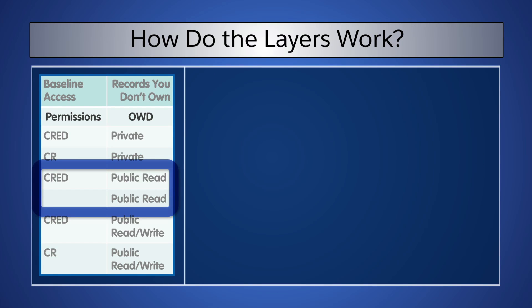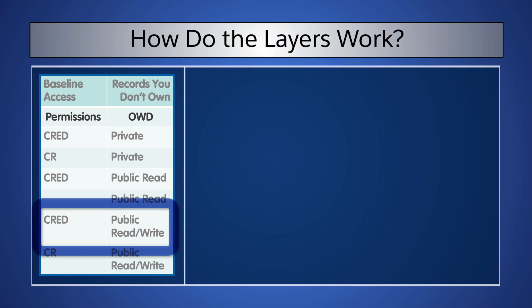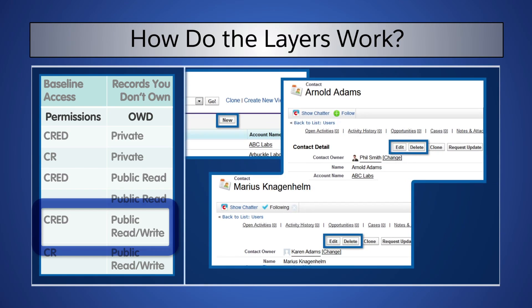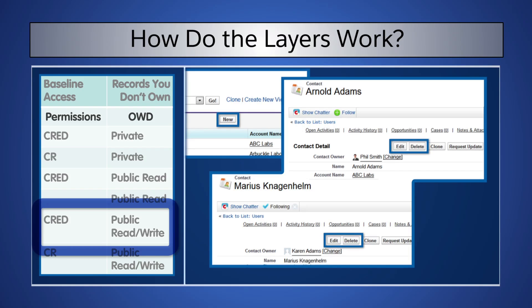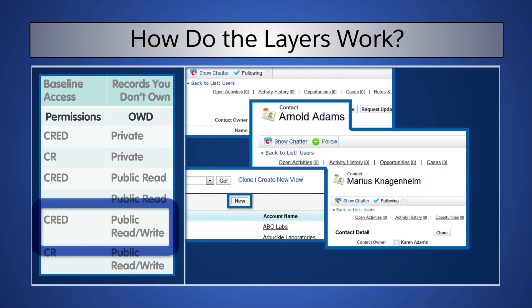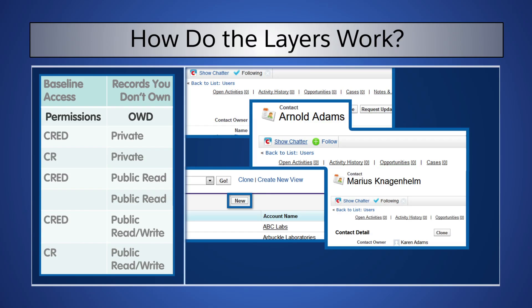In our last example, we'll set the permissions to Create, Read, Edit, Delete, and the org-wide default to Public Read Write. Then Karen will be able to create new contacts, view contacts she does not own as well as her own, and she will have Edit and Delete permission on all contacts. If we reduce her permissions to Create and Read, and keep the org-wide default the same, she will be able to create new contacts. However, the Edit and Delete buttons are not available on any contact records. Remember, org-wide defaults can never grant users more access than they have through their object permissions.